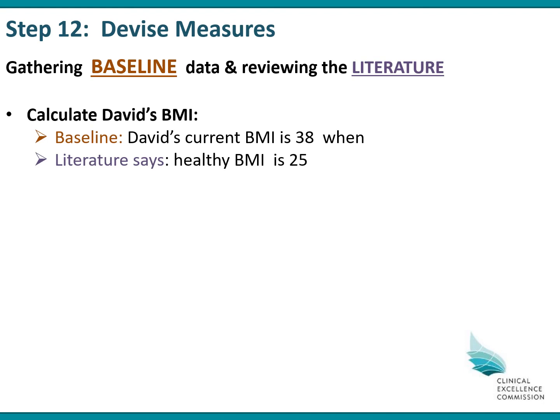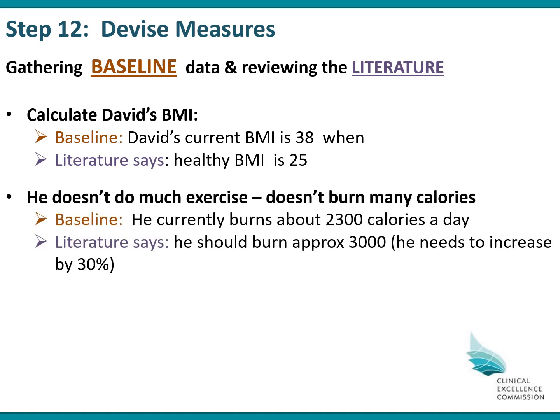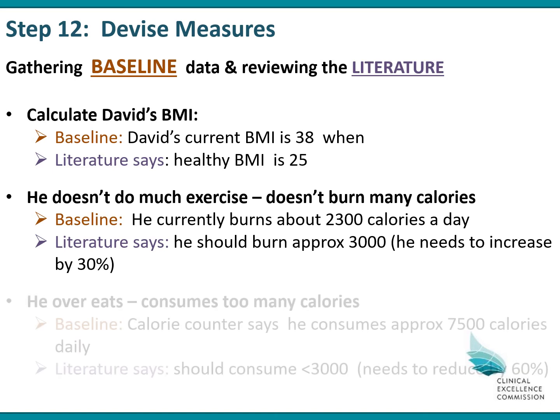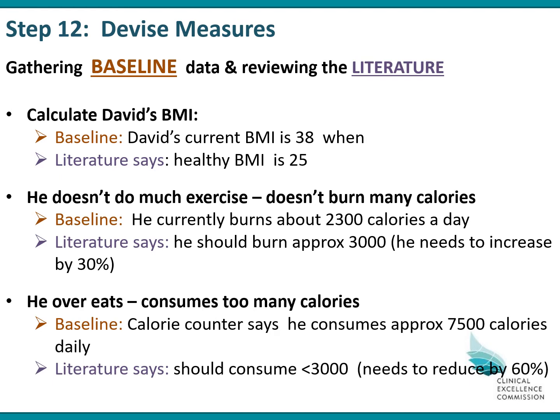You can also gather baseline data by doing an audit. David's current BMI is 38, and the literature says he should have a BMI of 25, so you can set measurable targets. A baseline audit found he currently burns around 2,300 calories a day, and the literature says he should burn approximately 3,000 — so he needs to increase by 30%. He also consumes around 7,500 calories daily, when the literature says he should consume less than 3,000 — so he needs to reduce by 60%.